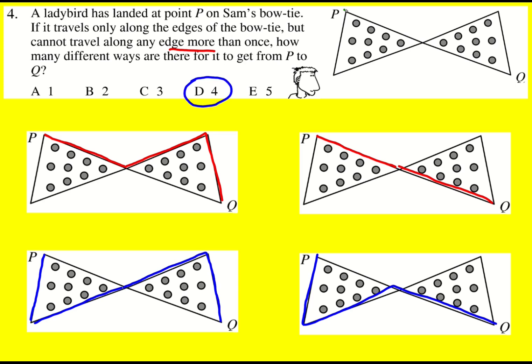You can do this even more quickly by just saying there's going to be two different routes to get to the middle, either along here or along here. And then from the middle there's two different ways to get to Q. So overall it's going to be two times two, which is four.